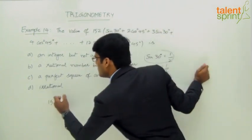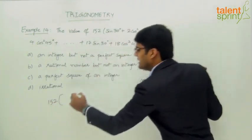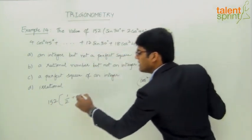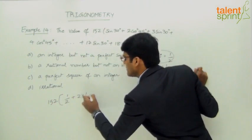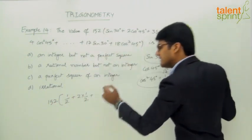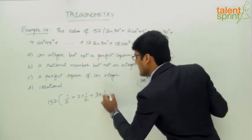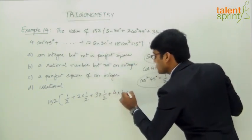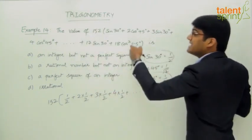So this expression becomes 152 into sin 30 is 1 by 2 plus this is 2 cos square 45, so 2 into 1 by 2 plus this is 3 sin 30, so 3 into 1 by 2 and 4 cos square 45, so 4 into 1 by 2, so on up to we have 18 cos square 45.